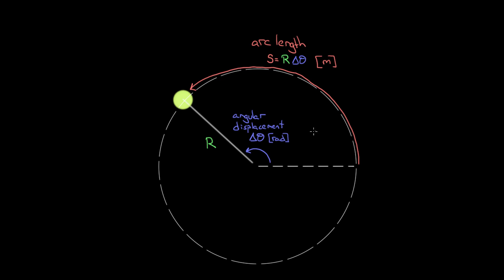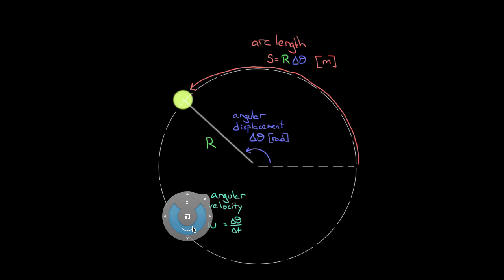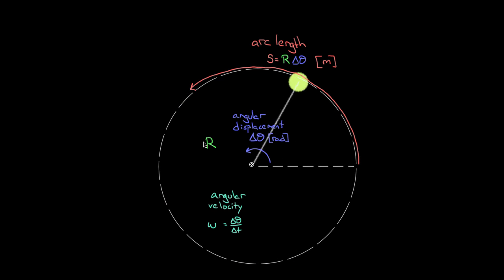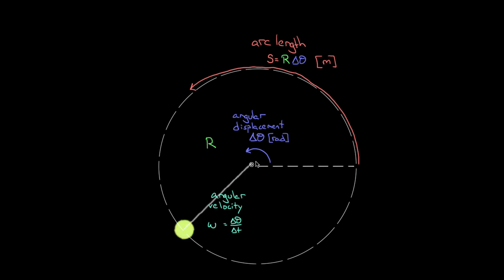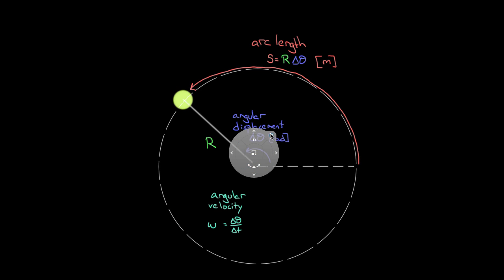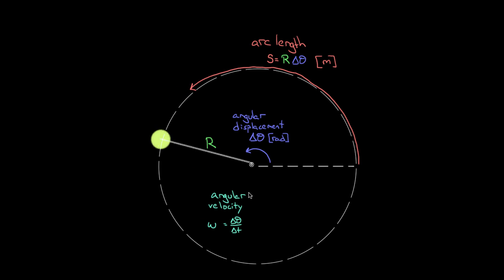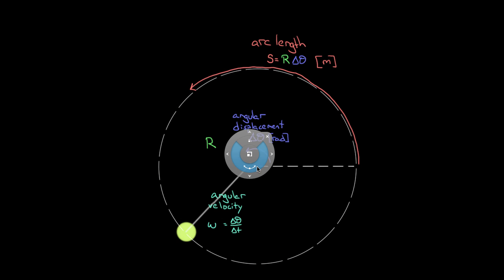The next relationship connects angular velocity to regular velocity. The angular velocity, represented by the Greek letter omega, is the angular displacement per time — the rate at which something is rotating through an angle. If rotating slowly, omega is small; if rotating quickly, omega is large. Clearly, speed and angular velocity are related because the higher the angular velocity, the higher the speed.